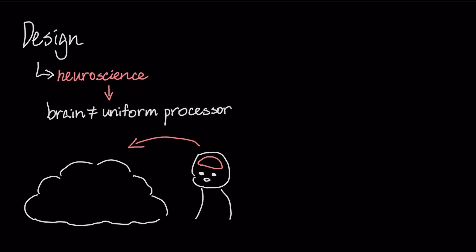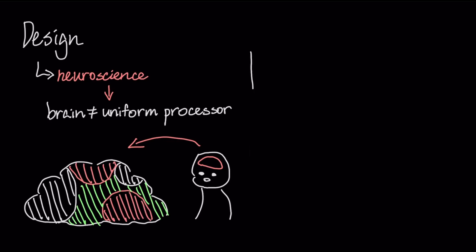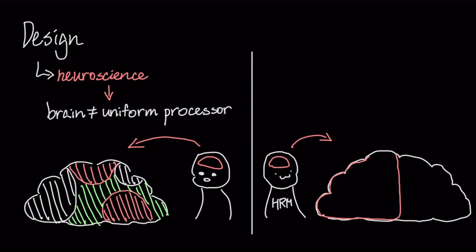The core design of HRM is inspired by a fundamental neuroscience principle. The brain isn't a uniform processor, but a hierarchy of specialized regions operating at different speeds. HRM implements this by using two coupled recurrent modules.